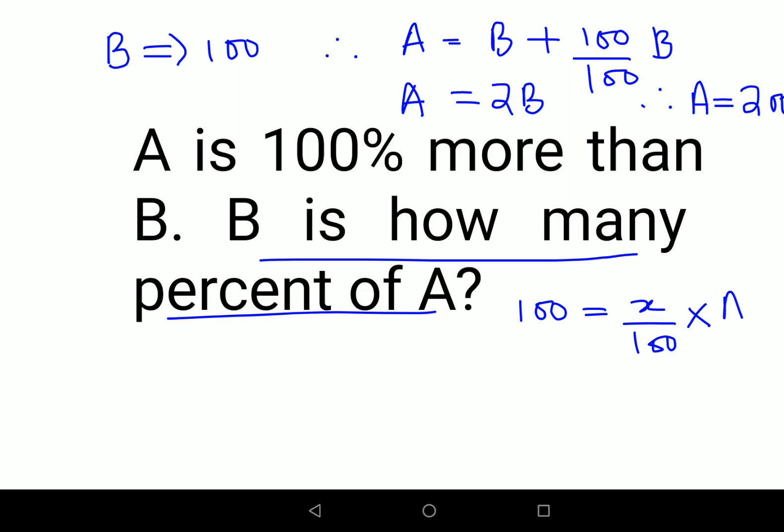Instead of A, I will put which value? 200. So this is cancelling, cancelling. I am left with 100 equals to 2X. Therefore X will be 50 on dividing both sides by 2.